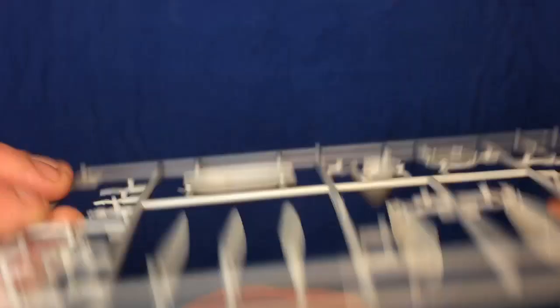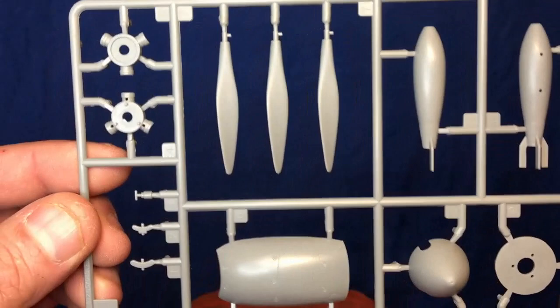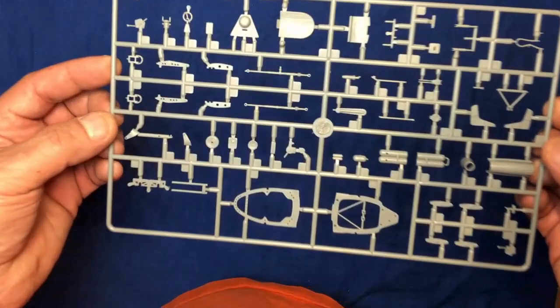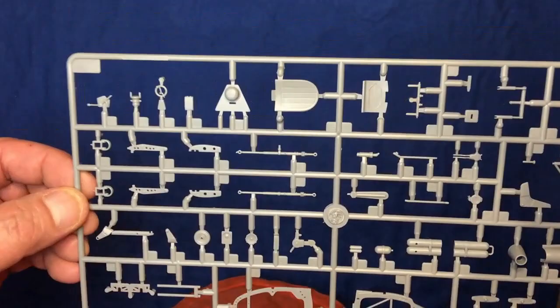As I say with all my reviews, this is an out-of-the-box review, this is not a build review. It could be the sharpest, most beautifully molded kit in the world - if it doesn't go together, it doesn't go together. This only tells you what's on the sprues and how nicely molded it is. It doesn't cover accuracy or how well it goes together or engineering. You could do this with many kits and then find that some of the engineering decisions have been a bit daft.